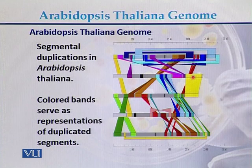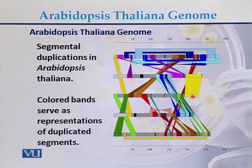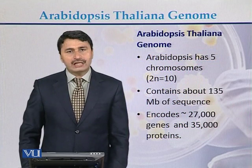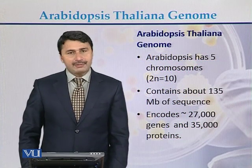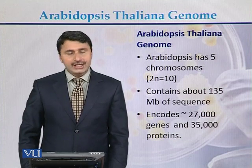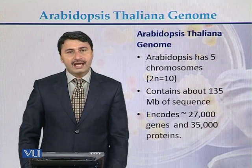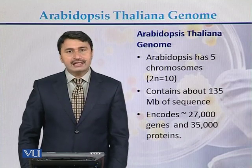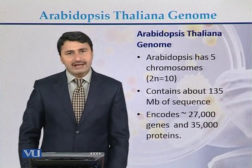To conclude about the genome of Arabidopsis: Arabidopsis has five chromosomes that constitute its total genome, and all five chromosomes have large segmental duplications. It contains approximately 135 Mb of the genome, encodes 27,000 genes, and approximately 35,000 proteins.